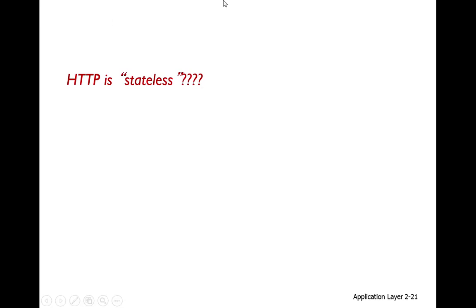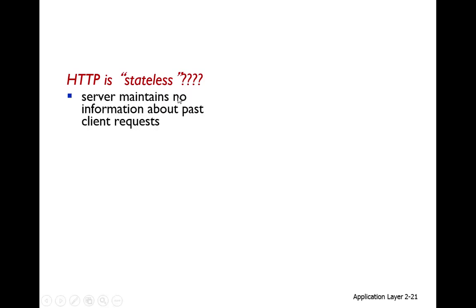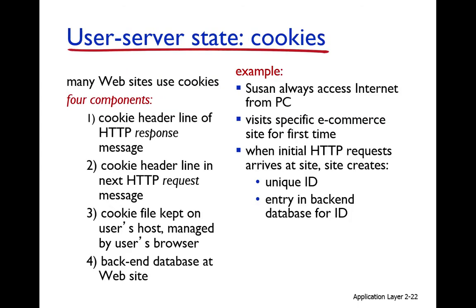HTTP is a stateless protocol. This means whenever you request an object from the HTTP server, the server will respond without remembering previous interactions. For example, if you request an object 1,000 times, the server will respond 1,000 times without asking why you need it again. So no state information is maintained. However, we do maintain some state information — for example, using cookies.